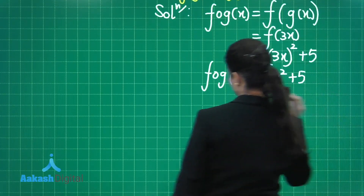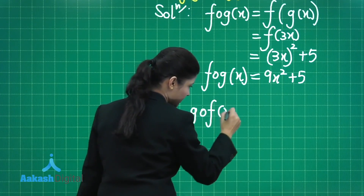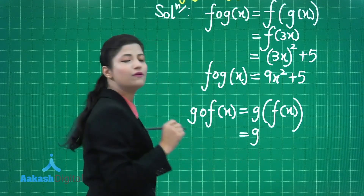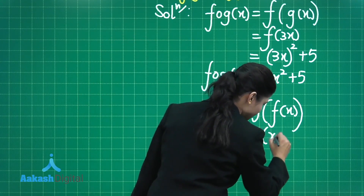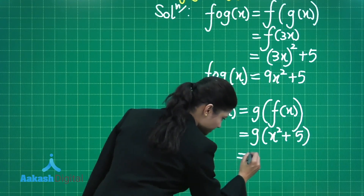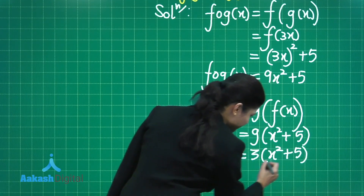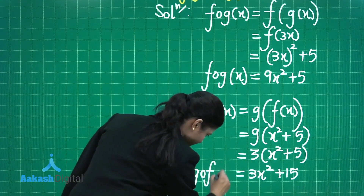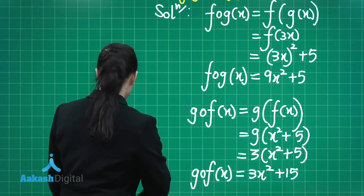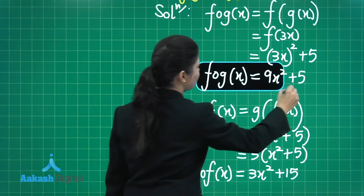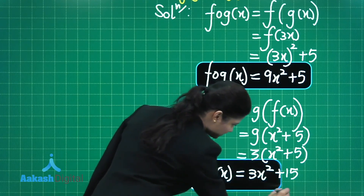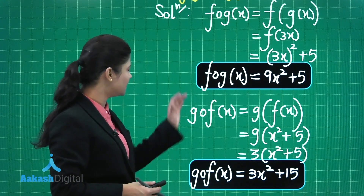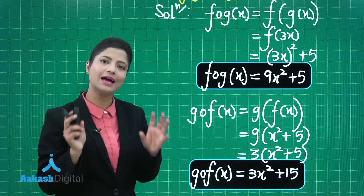Now for G∘F(x): G∘F(x) = G(F(x)) = G(x² + 5). Since G(x) = 3x, this becomes 3(x² + 5) = 3x² + 15. So F∘G(x) = 9x² + 5 and G∘F(x) = 3x² + 15. It is quite evident that F∘G ≠ G∘F — it is not necessary that both compositions are equal.